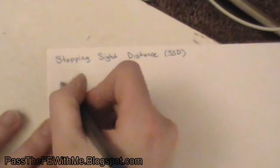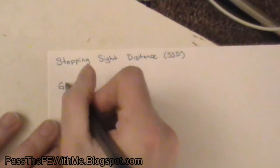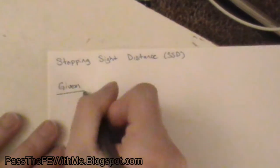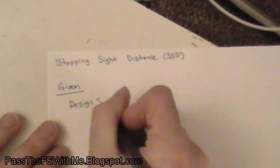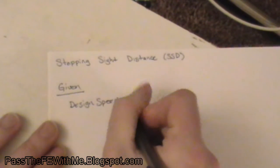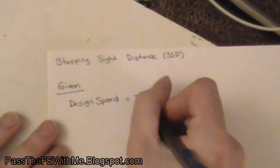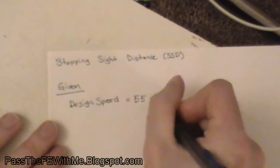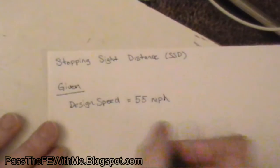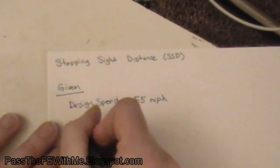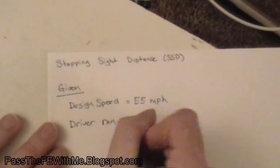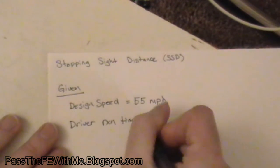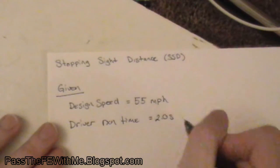Suppose you are given a highway with the following design characteristics. Design speed equals 55 miles per hour. Driver reaction time, that's 2.0 seconds.